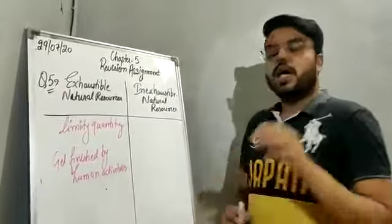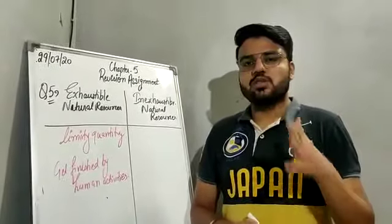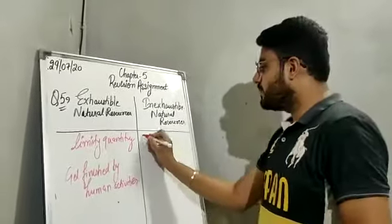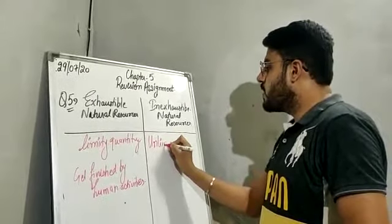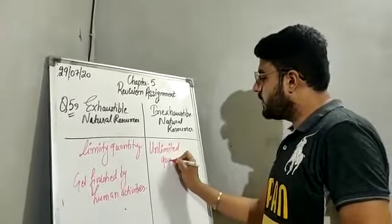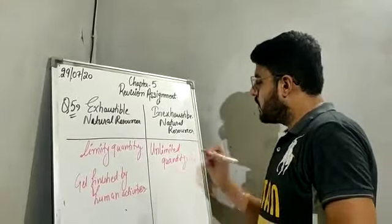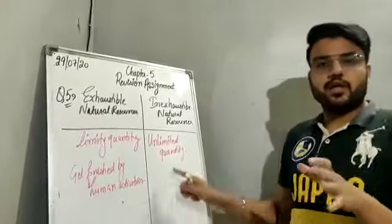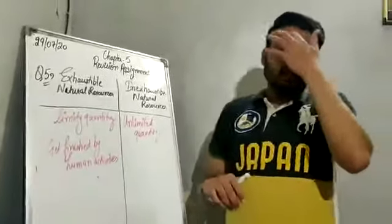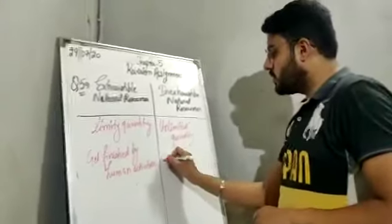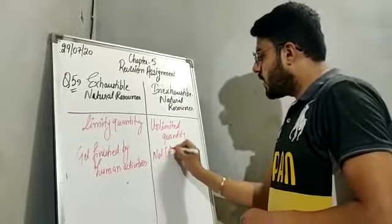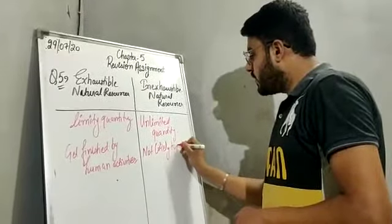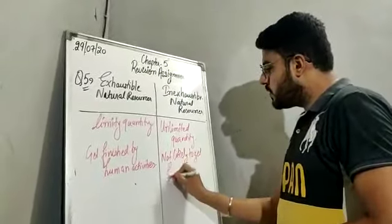Now, what are inexhaustible natural resources? Inexhaustible natural resources are the resources which are present in unlimited quantity in nature and they are not likely to get finished by human use or by human activities. They are present in unlimited amount.